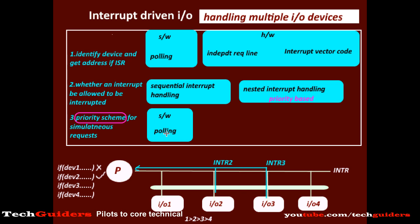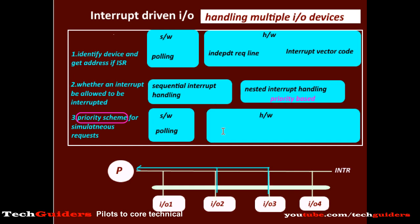However, polling is a slow and less efficient approach, so we should rely more on hardware. In the coming videos, we shall discuss how to implement a priority-based interrupt-driven I/O using hardware — one is a serial connection method known as daisy chaining, and the other is a parallel connection method using registers.